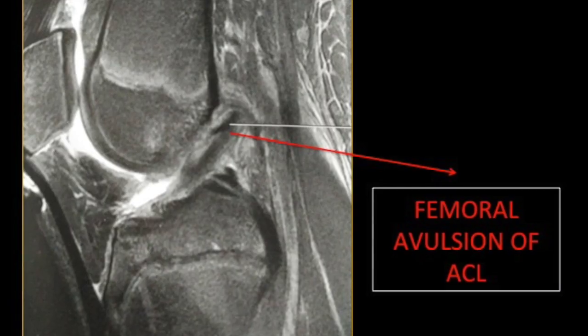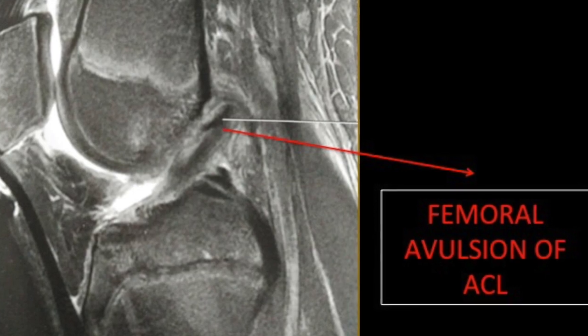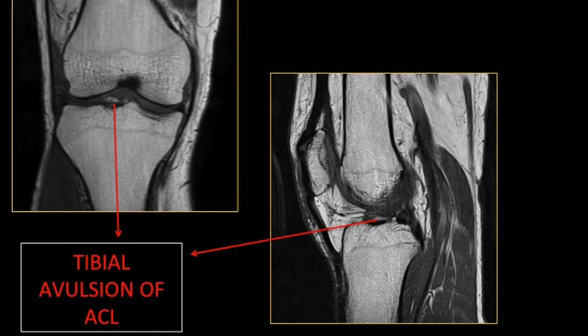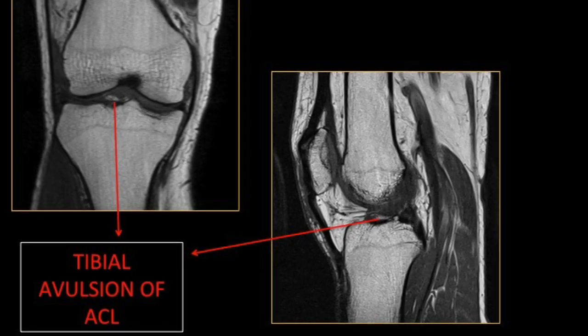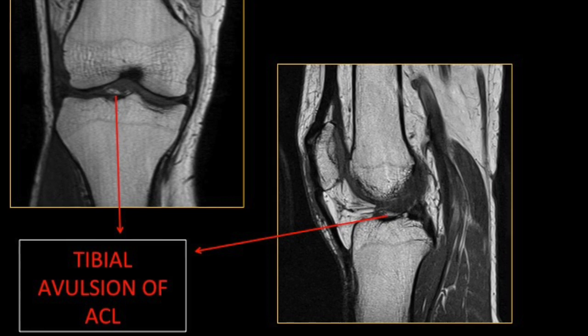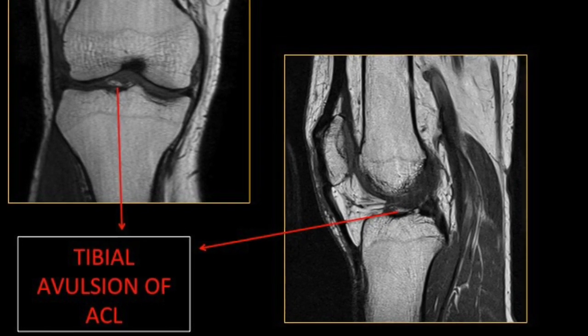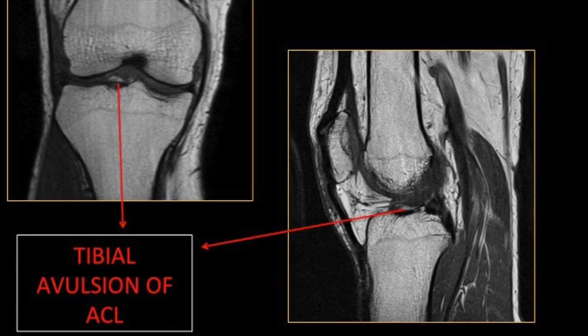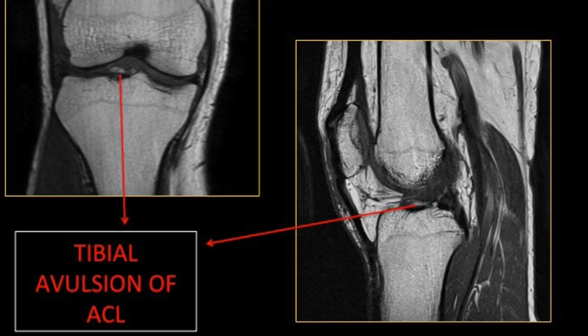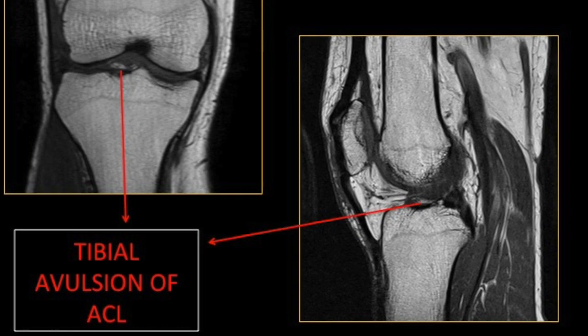ACL avulsions may be either femoral avulsions, which are usually not associated with any bony avulsion, or tibial attachment avulsions, which are often associated with tibial eminence fracture with a fractured fragment lifted up along with the ACL.